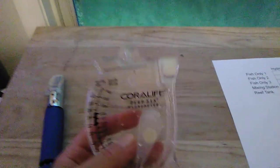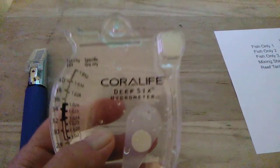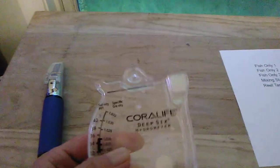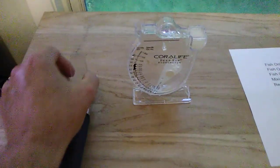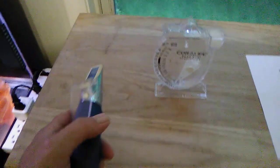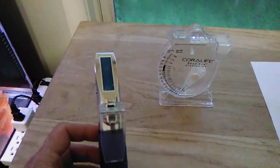This is the Coralife Deep Six hydrometer. What a name! Here's what I did: I took my refractometer, assuming that this is my standard, so I calibrated this as best I could and then I measured all my tanks with the refractometer and the new hydrometer. Here's what I got. Excuse my shaky hands.